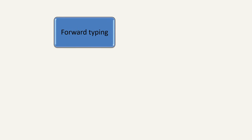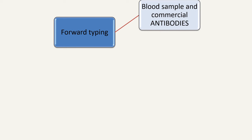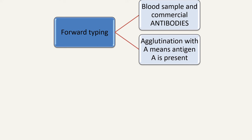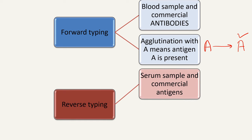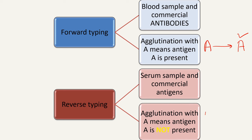To summarize: in forward typing, we use the blood sample which has the patient's antigens, and we add commercially prepared antibodies. Agglutination with antibody A means antigen A is present. In reverse typing, we use the serum sample that contains the patient's antibodies, and we add commercially prepared antigens. Here, agglutination with antigen A does not mean A is present — it means the patient has antibodies against A, so antigen A is actually absent. If there is agglutination in forward typing with the antibodies, the antigen is present; in reverse typing, agglutination with the antigens means that antigen is absent from the patient.